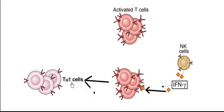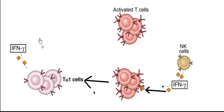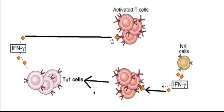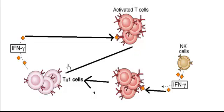So binding of interferon gamma produced by the natural killer cell will take those activated T cells and convert them to T helper 1 cells. Those T helper 1 cells will produce many different types of cytokines. One of the cytokines they produce is interferon gamma, and this interferon gamma will go and bind to those receptors and further convert the activated T cells to T helper 1 cells.